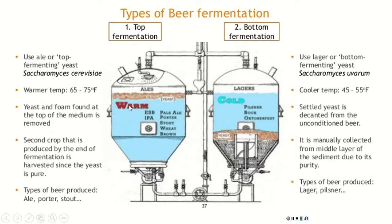An important consequence of this: lagers have to be consumed extremely cold. Products like Budweiser and Coors Light are lagers — American pilsners — and they must be kept cold because if they warm up, the taste suffers. Ales, since they were brewed at warmer temperatures, can be consumed at warmer temperatures and still taste good. If you leave a Budweiser on the tabletop for an hour it doesn't taste good, whereas an ale left out for a while is still quite enjoyable.